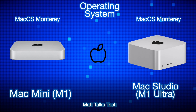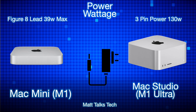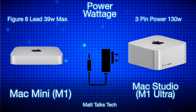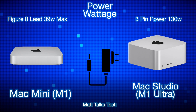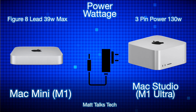For power, the M1's efficiency means the Mac Mini has a maximum power draw of up to 39 watts. The Mac Studio, being a much more power-hungry machine with the M1 Ultra, comes with a three-pin power connector and draws up to 130 watts — significantly more than the Mac Mini.